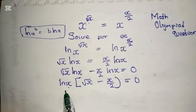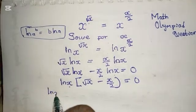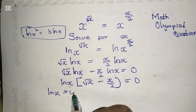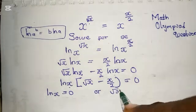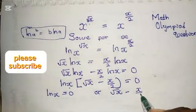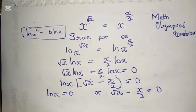Now, since this product is equal to 0, this implies that ln(x) equals 0. Also, √x minus x/2 equals 0.